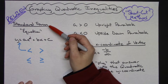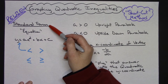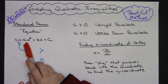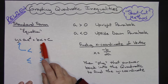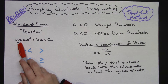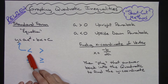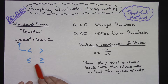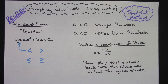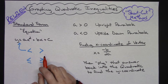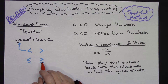If our quadratic is in standard form and it's an equation, it's going to be y equals ax squared plus bx plus c. With it being an inequality, the only difference is that the equal sign is going to be replaced with either a less than or greater than sign, or a less than or equal to or greater than or equal to sign. This is going to involve some shading, and you're going to have to make a decision about whether that parabola is going to be a dotted line or a solid line.